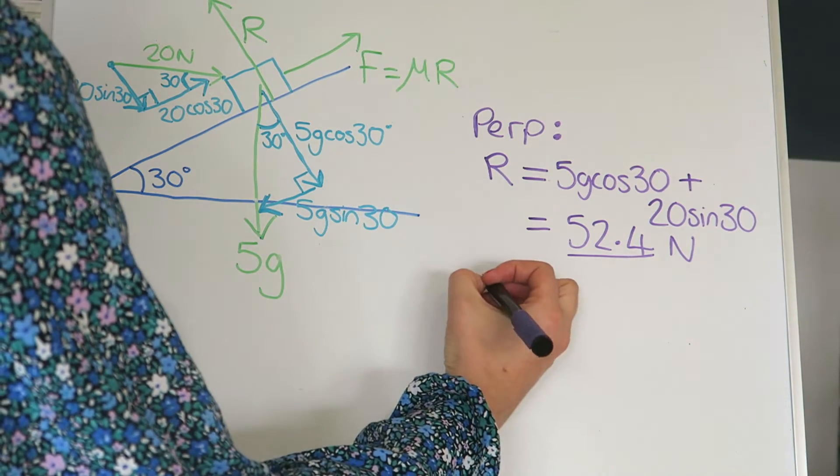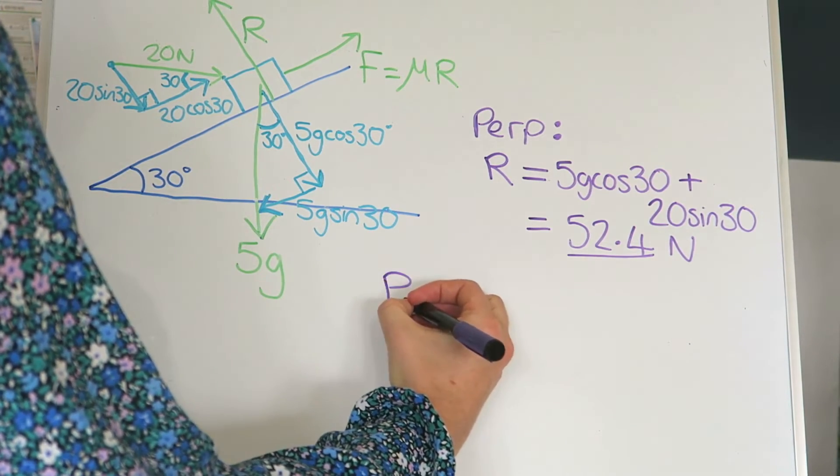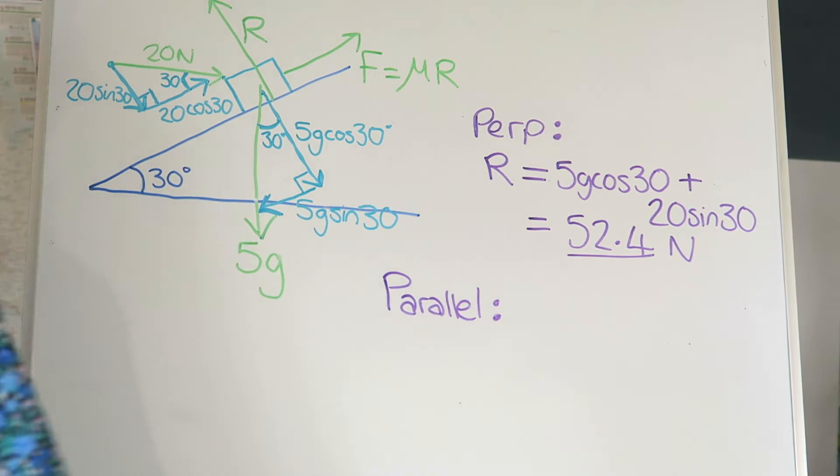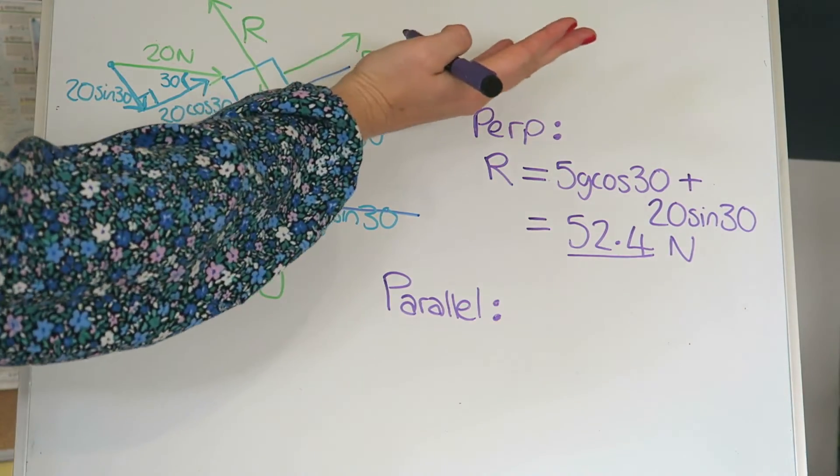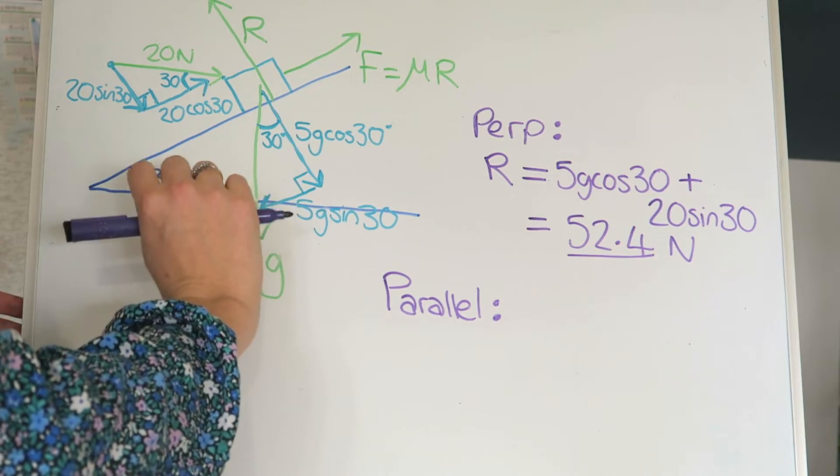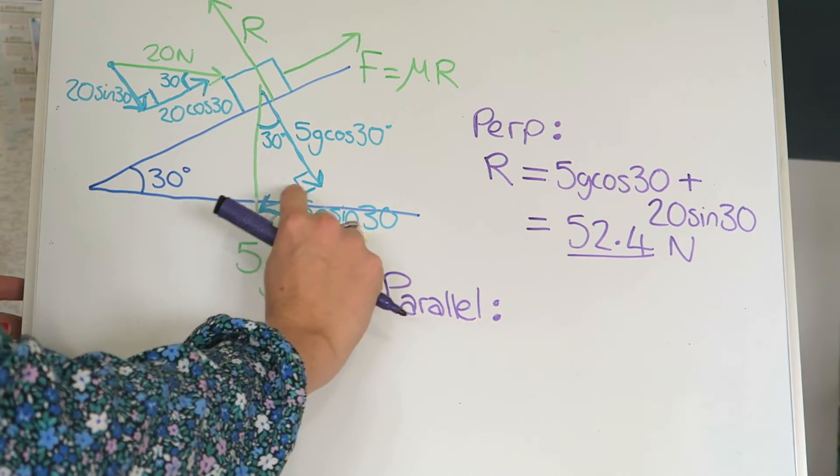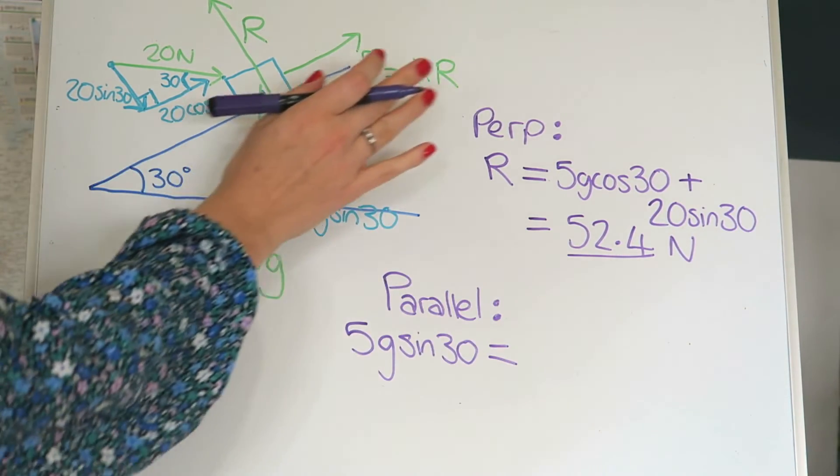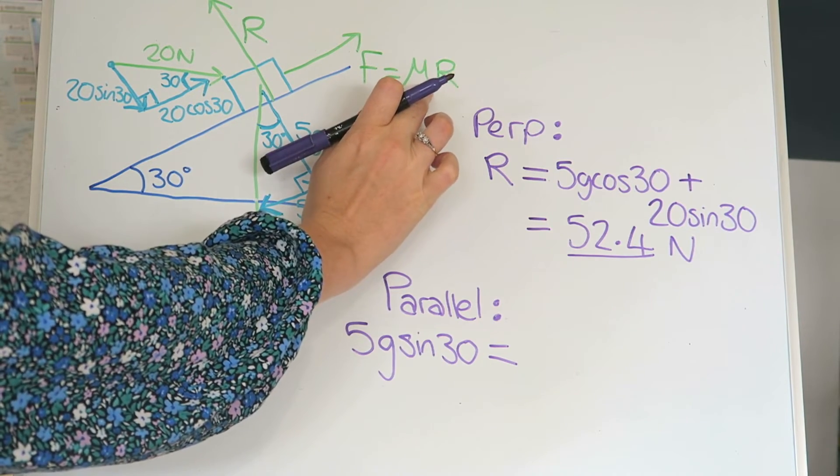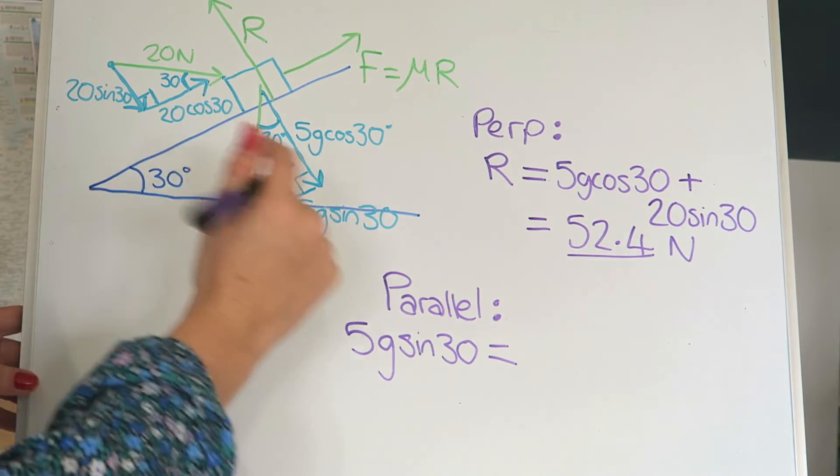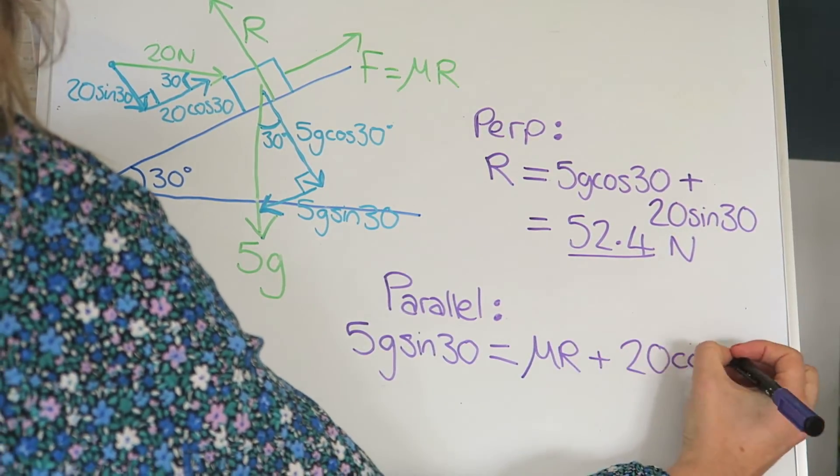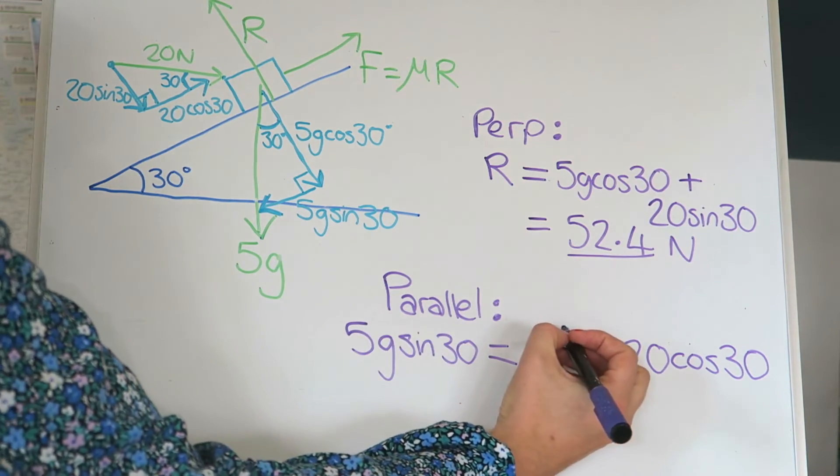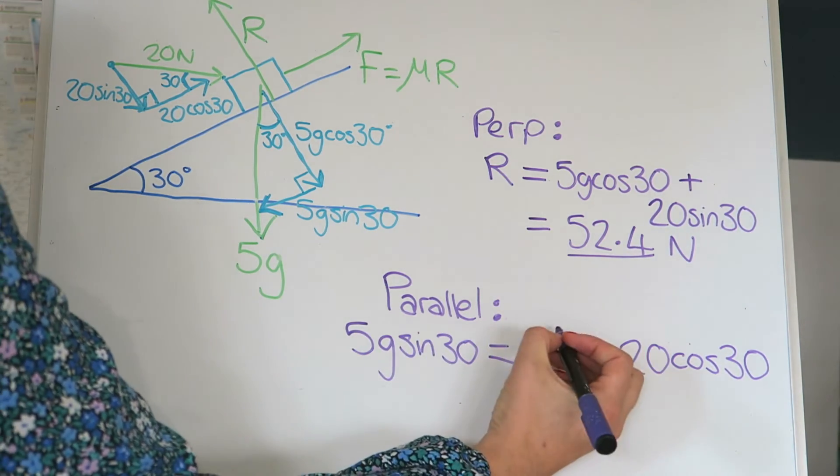And now the second part of the question, hopefully we'll get by looking at the forces parallel to the slope. So the forces down equal the forces up the slope. What have we got here? We've got the forces down as this one here, 5g sine 30. And then the forces up, we've got mu R, which is friction, and we've got 20 cos 30. Now we've already worked out R, it's 52.4, so we can actually replace that one by 52.4, so 52.4 mu.